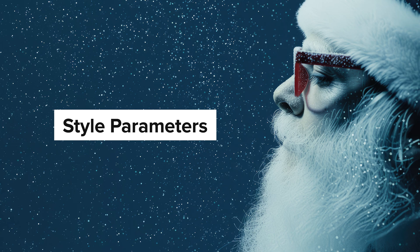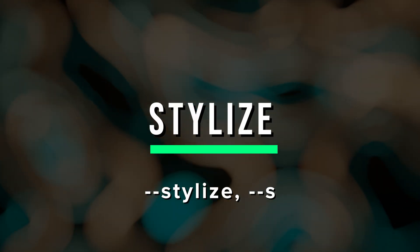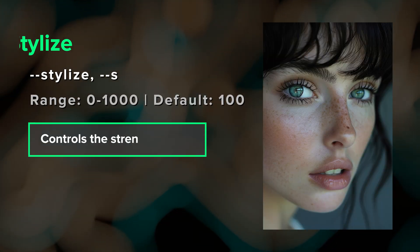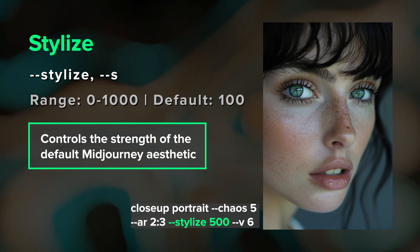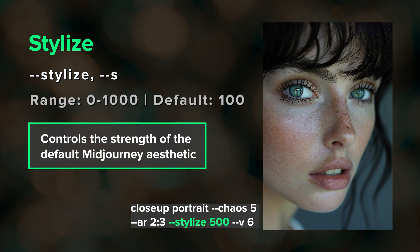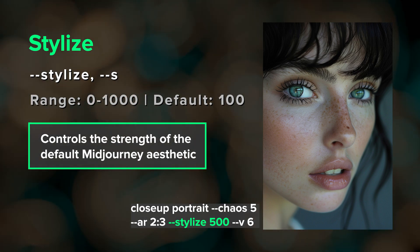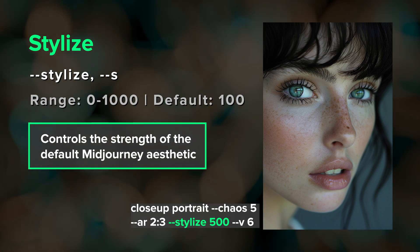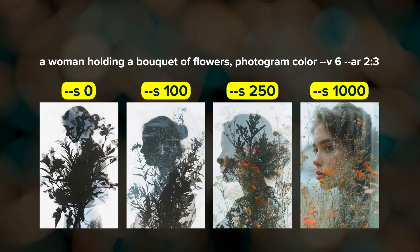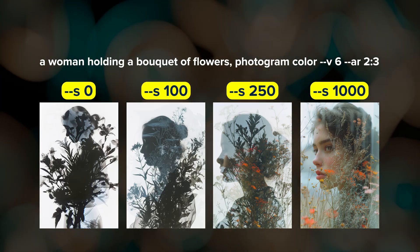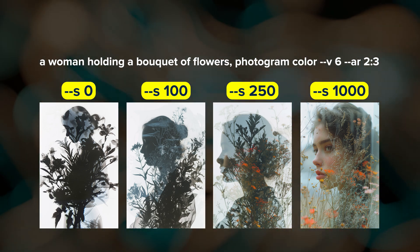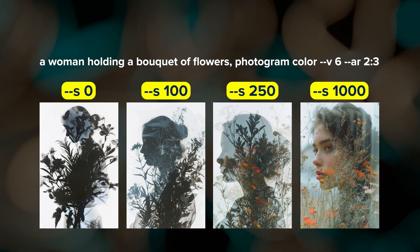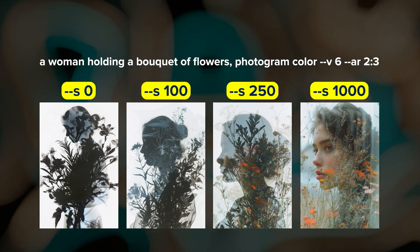Next we have several style-related parameters. The first is stylize or --s. Each Midjourney model has a default visual aesthetic, and stylize controls the strength of that aesthetic in your results. The default value is 100 and the range is 0 to 1000. A higher value will give you more stylized results, but with potentially reduced prompt adherence. The stylize parameter is also used in conjunction with personalization, which we'll get to later.